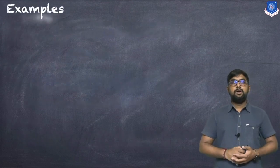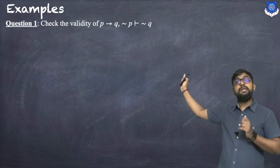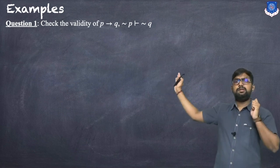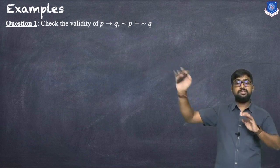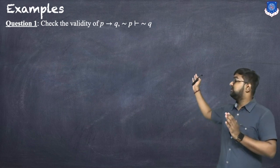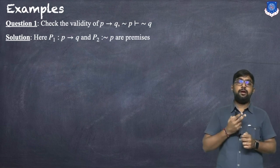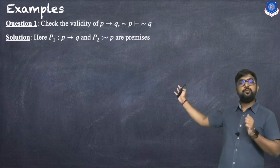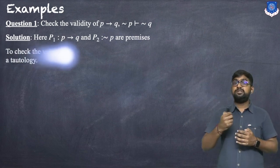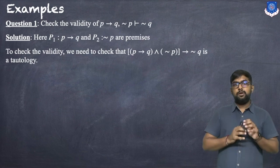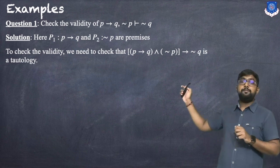Let us discuss an example. Check the validity of: p → q, ¬p ⊢ ¬q. Before the turnstile symbol, the statements are premises; after it is the conclusion. So premise P1 = (p → q), premise P2 = ¬p, and the conclusion is ¬q. To check validity, we apply the theorem: (p → q) ∧ ¬p → ¬q must be a tautology.